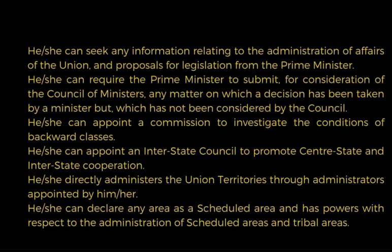The President can seek any information relating to the administration of the union and proposals for legislation from the Prime Minister. He or she can require the Prime Minister to submit for consideration of the Council of Ministers any matter on which a decision has been taken by a minister but not yet considered by the council. He or she can appoint a commission to investigate conditions of backward classes, appoint an interstate council to promote center-state and interstate cooperation, directly administer union territories through appointed administrators, and declare any area as a scheduled area with powers over scheduled and tribal areas.